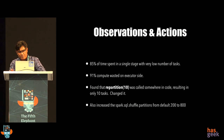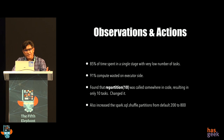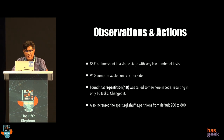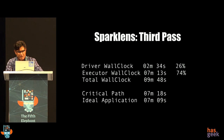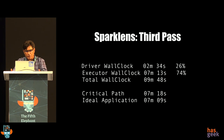Coming back to the example: 85% of the time is spent in a single stage, and it has a very low number of tasks. When we looked into the code, we found that repartition(10) was called somewhere — and that was resulting in only 10 tasks while 800 cores were available. Most likely this was done on a staging environment and the same code came to production. We changed it and also changed the Spark SQL shuffle partitions from the default 200 to 800. After these changes, the application finished in about 10 minutes — down from 158 minutes with just a couple of changes.